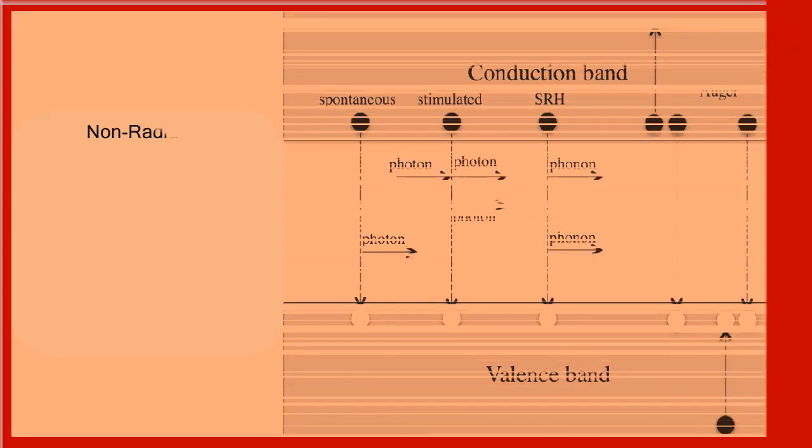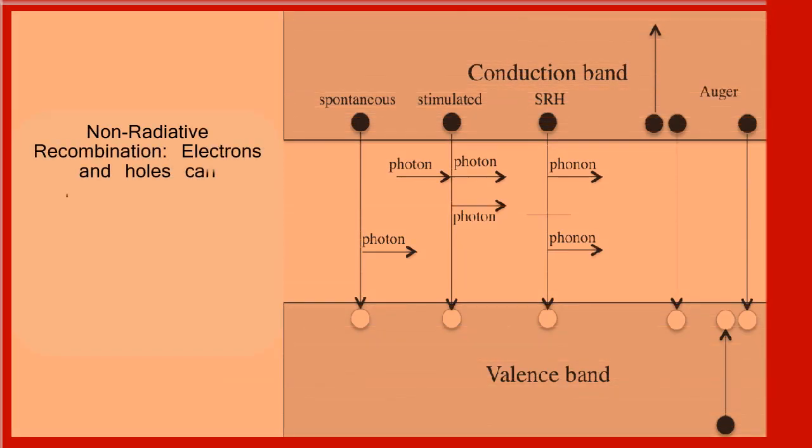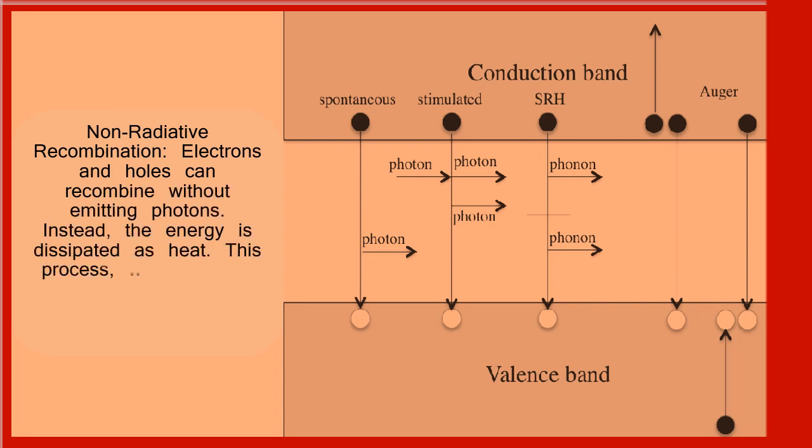Non-radiative recombination. Electrons and holes can recombine without emitting photons. Instead, the energy is dissipated as heat. This process, which doesn't produce light,